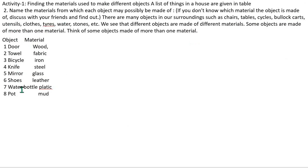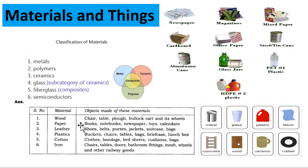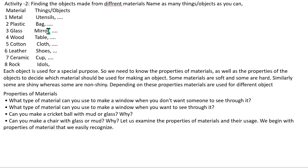These are activities in your textbook. They give certain products or objects and you have to write the material from which each has been prepared. A door can be prepared from wood, a towel from fabric, a bicycle from iron, a knife from steel or iron, a mirror from glass, shoes from leather, a water bottle from plastic, and a pot from mud. In activity 2, given a material, you write the objects that can be made from it — from wood, paper, leather, plastic, cotton, and iron you can list all the relevant objects.